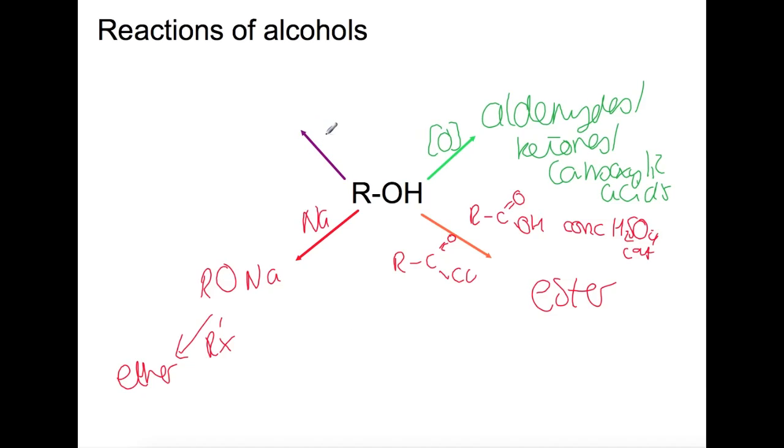Alcohols can undergo dehydration reactions using aluminium oxide or concentrated sulfuric acid. This produces alkenes, and it is the opposite of the acid catalyzed hydration reaction.